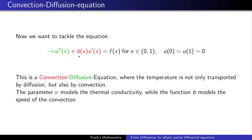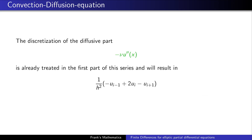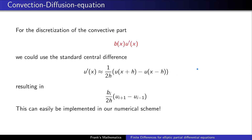The discretization of the diffusive part is standard — we've done this several times before, and it results in the usual expression. More interesting is the discretization of the convective part. For the first-order derivative, if you have no better idea, you can start with the standard central difference, which results in: b_i over 2h multiplied by (u_{i+1} minus u_{i-1}).